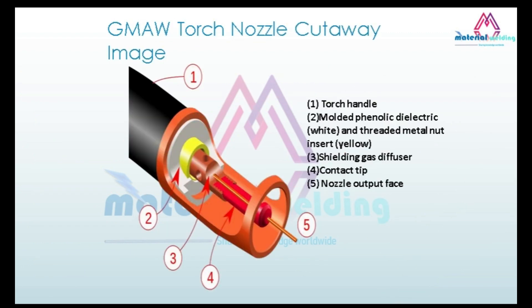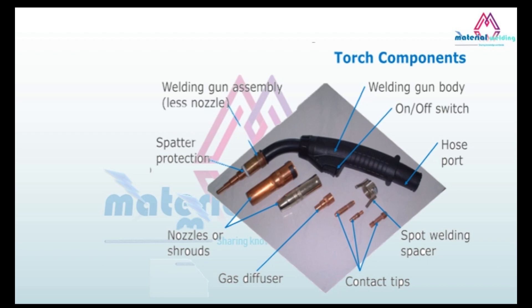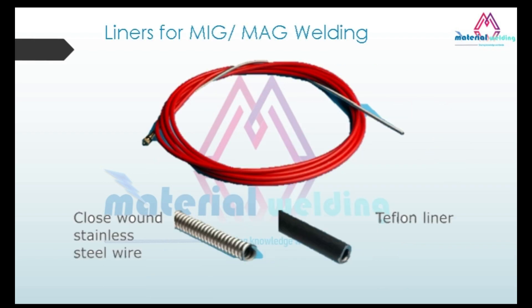The welding torch cutaway is shown for learner reference, with all part names marked. The different components of the welding torch are illustrated — most parts are replaceable, which helps mitigate the cost of full torch replacement. Liners for the GMAW torch are available in two types: closed wound stainless steel wire and Teflon liner.